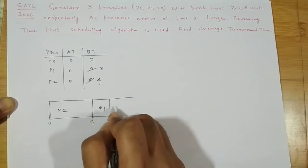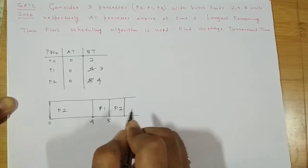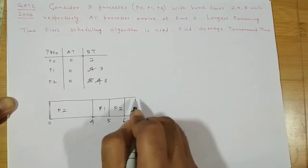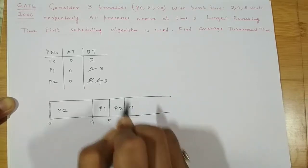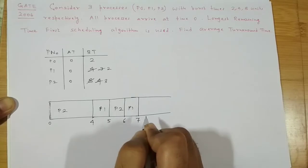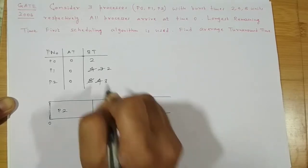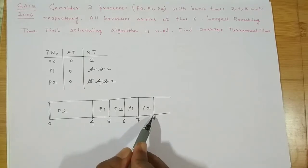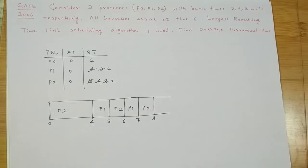This is what we call thrashing — constant swapping of processes in and out. Process P2 gets one unit, then P1 gets the CPU again. This constant movement wastes precious CPU time. Each of these points on the Gantt chart represents a context switch, and context switching incurs significant CPU overhead, which is greatly increasing here.